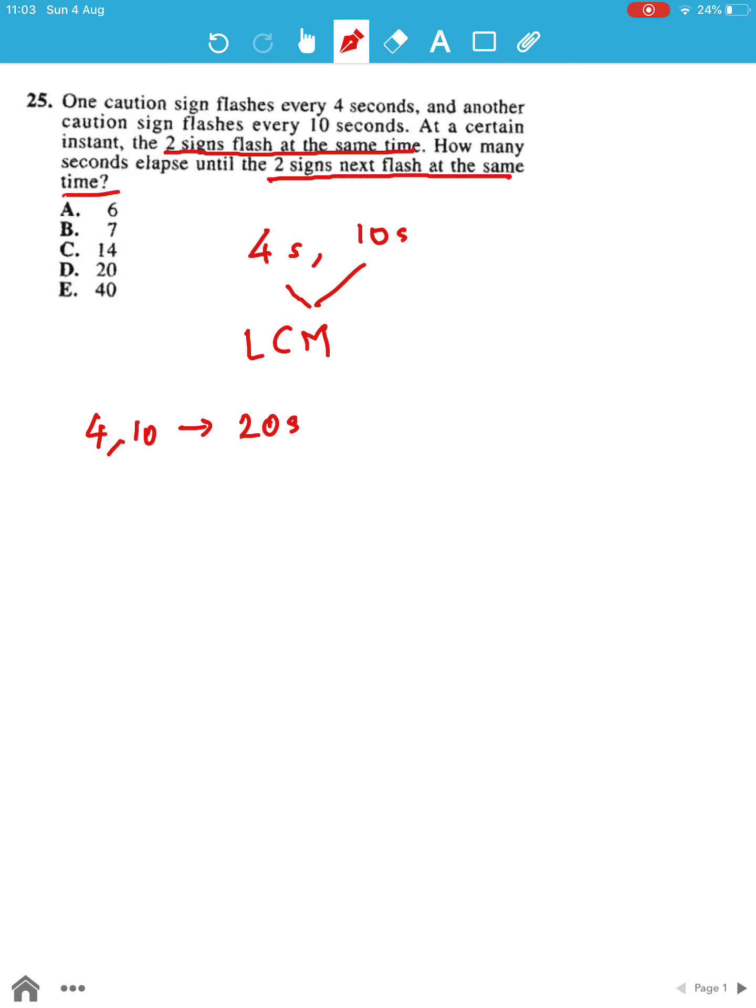So if the first LCM, which is the lowest LCM, is 20 seconds, the next common multiple would be at 40 seconds. As you can see, you have 10, 20, 30, and 40 as the multiples of 10, out of which 20 and 40 are both common multiples for 4. Hence, 40 seconds.